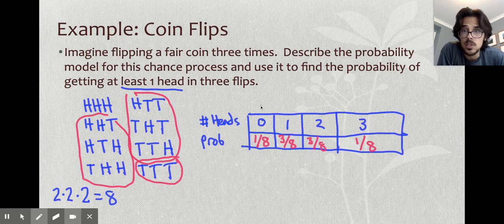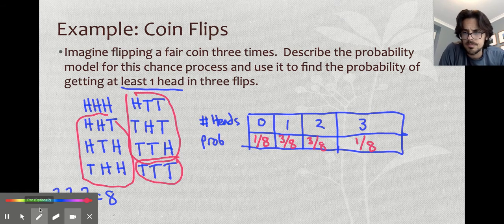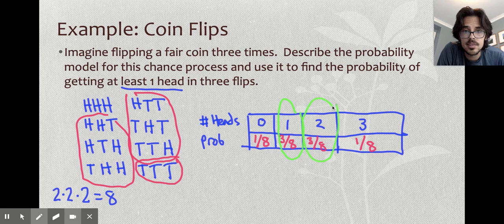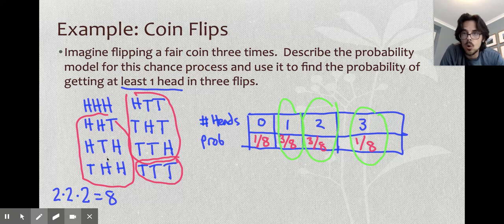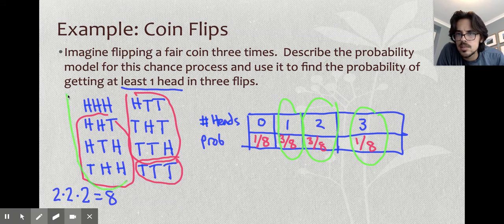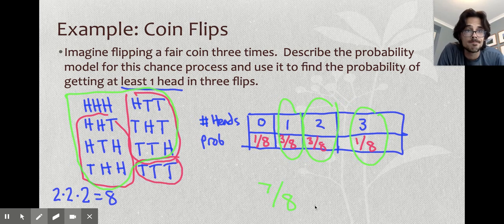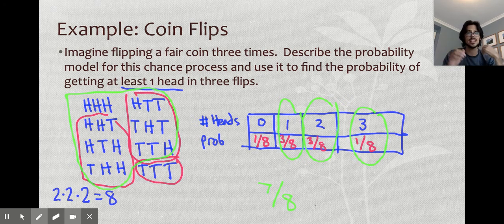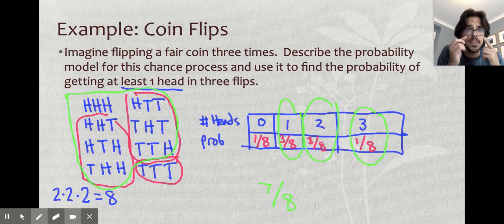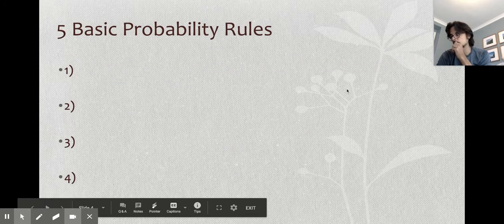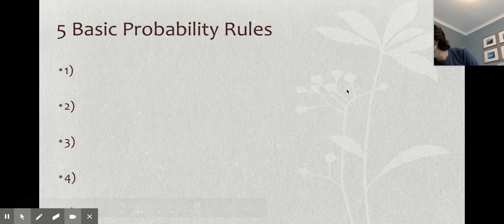They ask us find the probability of getting at least one head in three flips. At least one head could be one, two, or three heads. Basically, it's just not zero heads. All these circled guys have at least one heads. So the answer to the problem is seven out of the eight possibilities. If you make a list of everything that can happen, it makes probability questions not that bad to analyze.